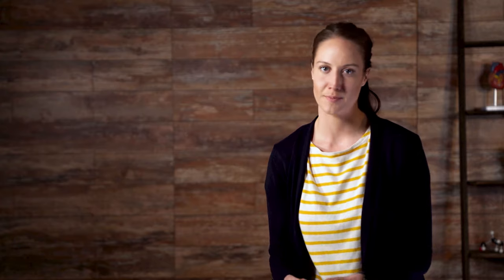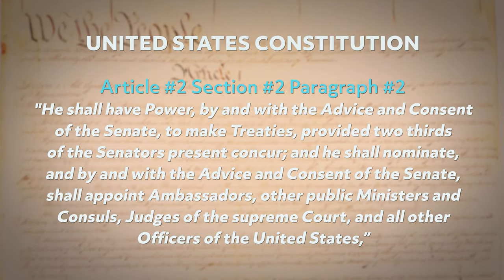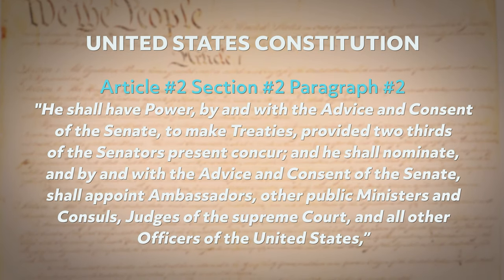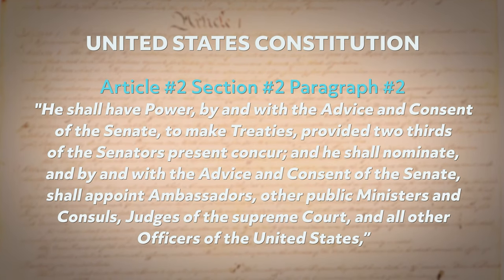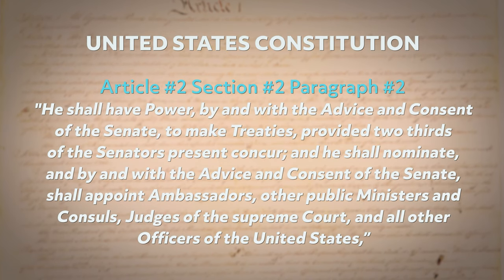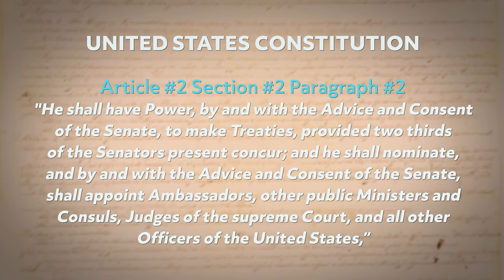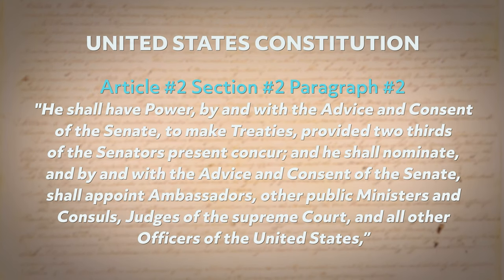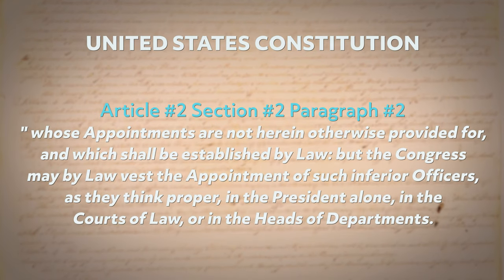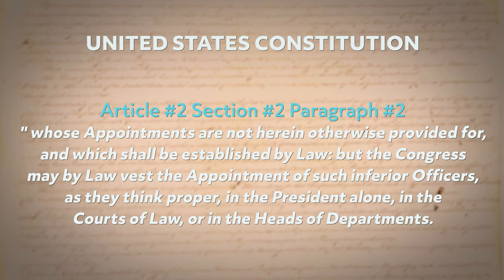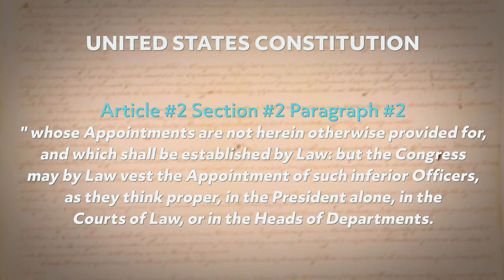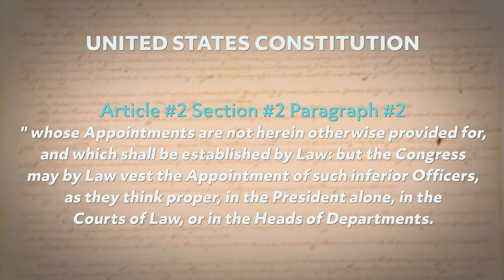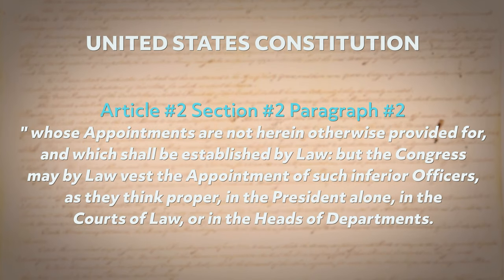In paragraph 2 of Section 2 you can see the checks and balances the framers implemented: 'The president shall have power, by and with the advice and consent of the Senate, to make treaties provided two-thirds of the senators present concur, and he shall nominate and, by and with the advice and consent of the Senate, appoint ambassadors, other public ministers and consuls, judges of the Supreme Court, and all other officers of the United States whose appointments are not herein otherwise provided for. But the Congress may, by law, vest the appointment of such inferior officers as they think proper in the president alone, in the courts of law, or in the heads of departments.'